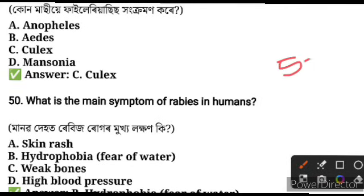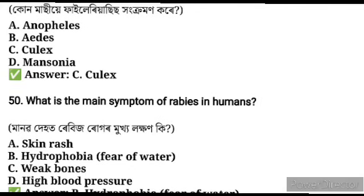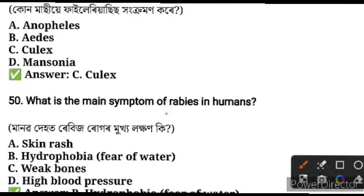This video has discussed 50 important human disease questions. What are the main symptoms of rabies in humans? Rabies symptoms include hydrophobia — fear of water.